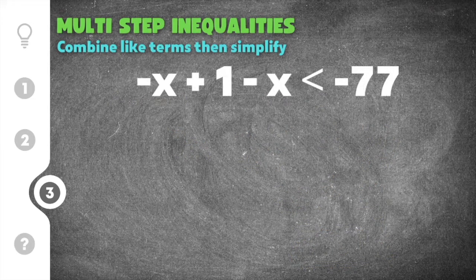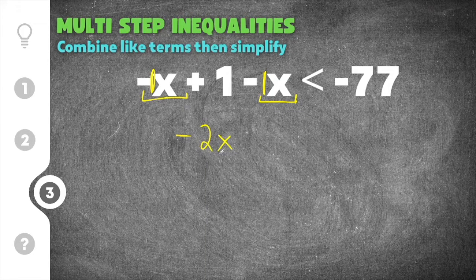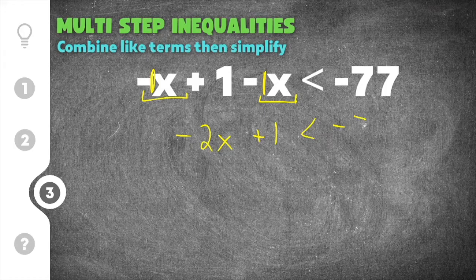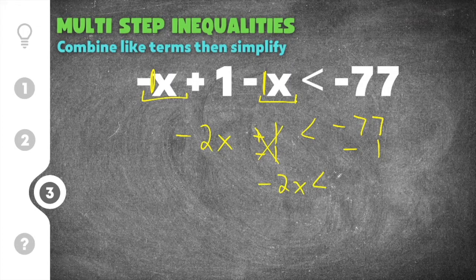Our last practice problem gives us negative x plus 1 minus x is less than negative 77. We're going to combine like terms because we have x's on the same side of the inequality. Negative x minus 1x — it's not written but both of these have a coefficient of 1, so this is like saying negative 1 minus 1, which is negative 2. We keep the x and bring down plus 1 and less than negative 77. Now we have negative 2x plus 1 is less than negative 77. We have to get rid of this plus 1, so the opposite of plus 1 is minus 1. I'm going to subtract 1 from both sides. We bring down negative 2x is less than, and negative 77 minus 1 is negative 78.